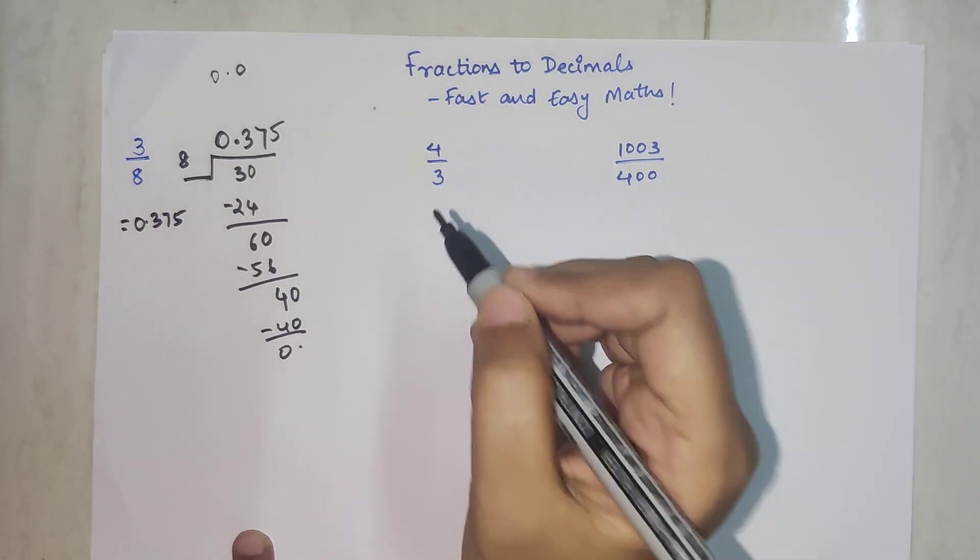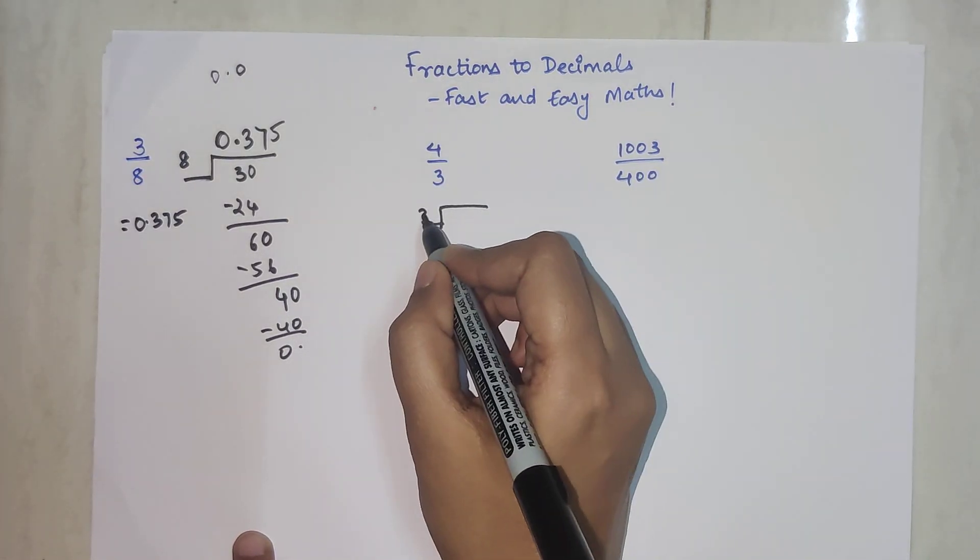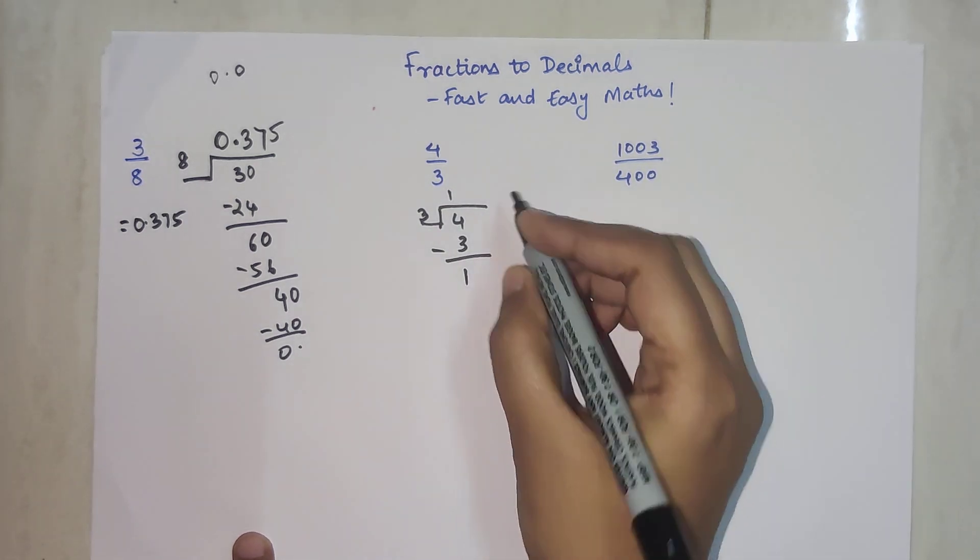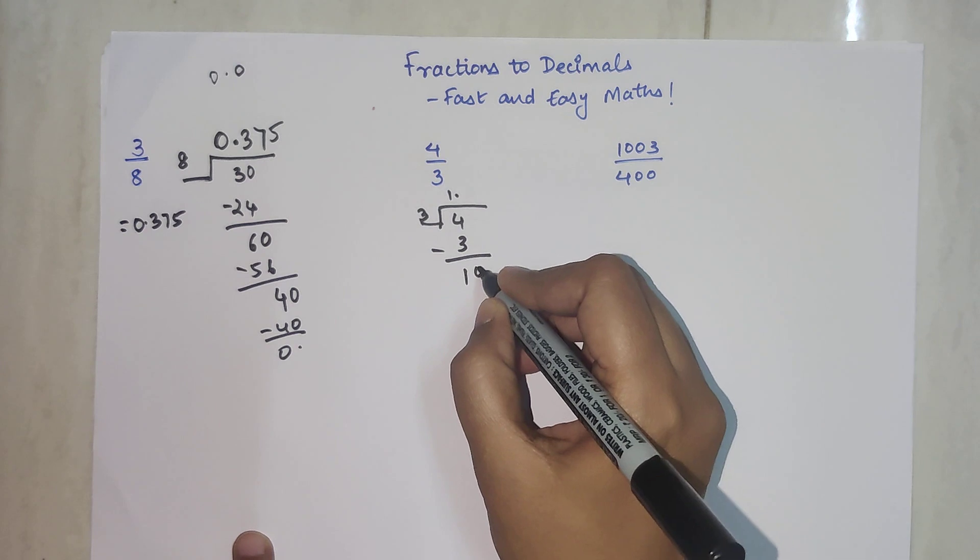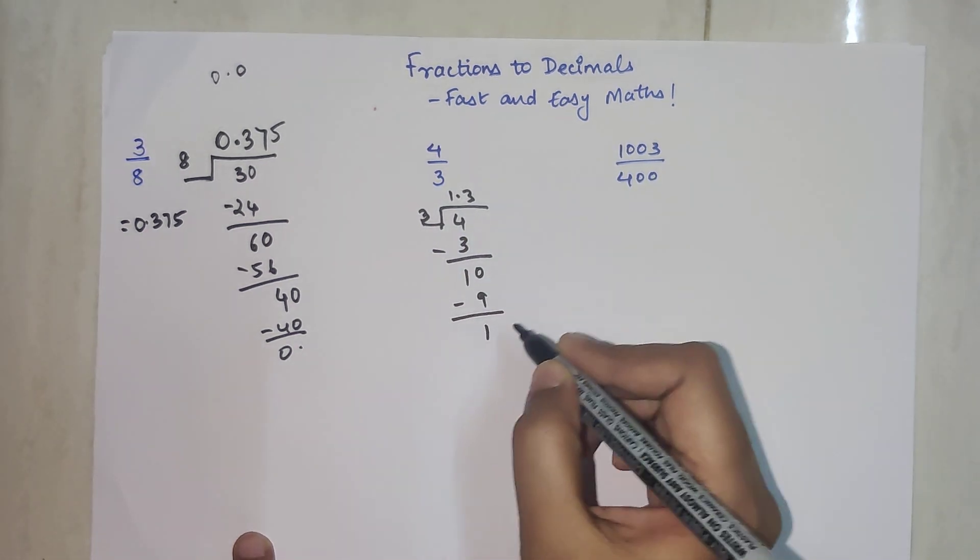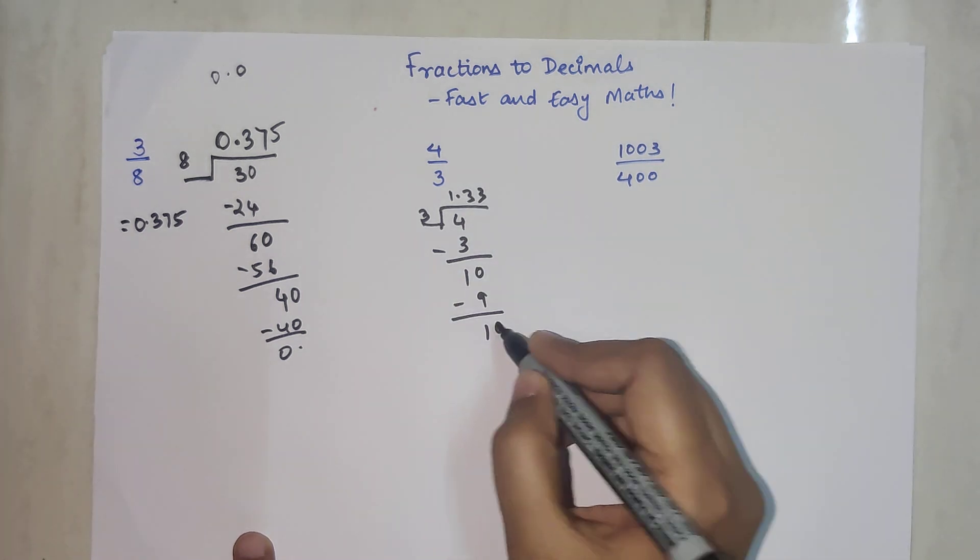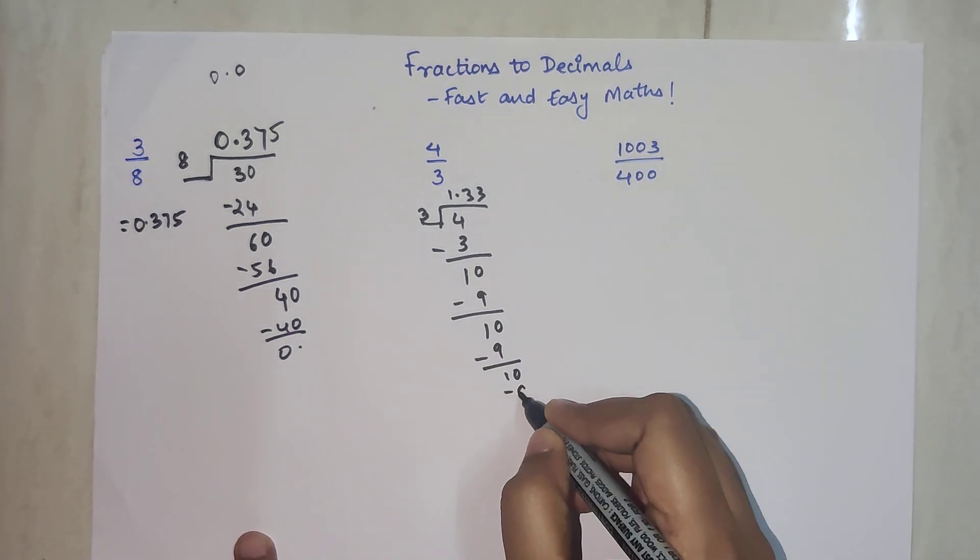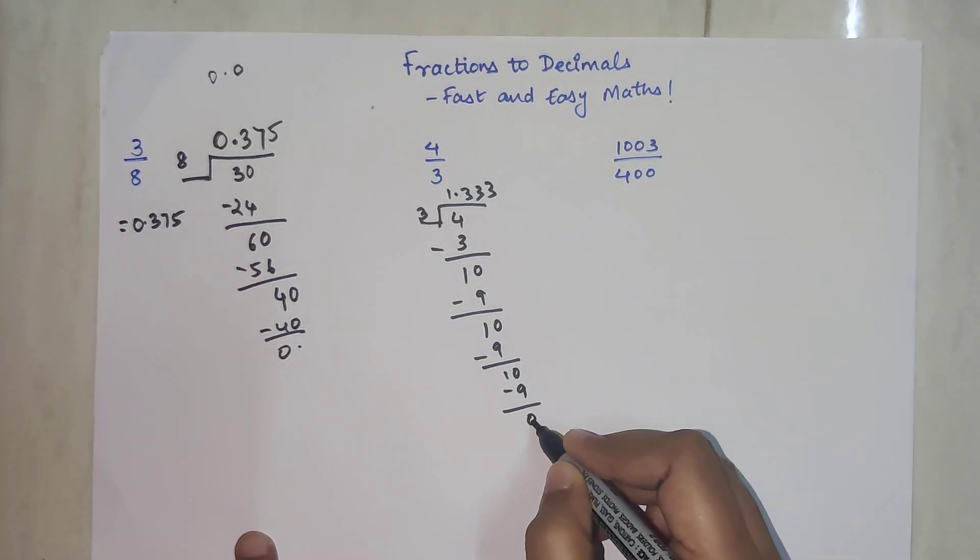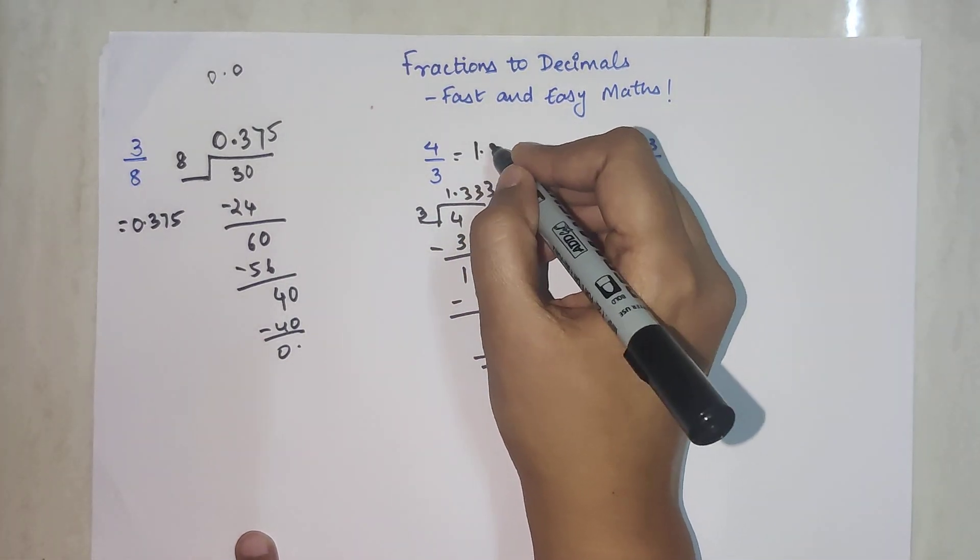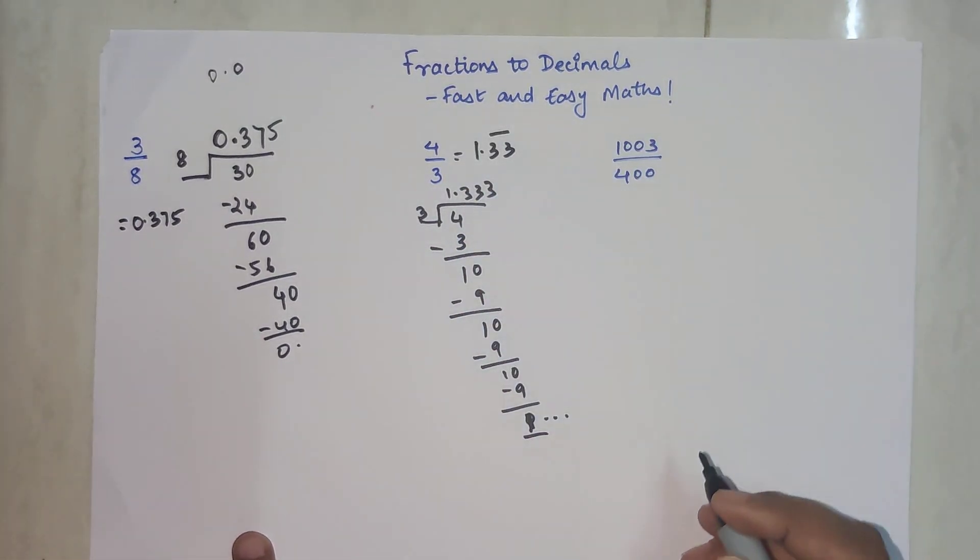Now next, we have 4/3. 3 times 1 gets me 3, I'm left with 1. So I can put a decimal, this is 0, and this is 3. So it gets me 9, 1. So again 3, 0, 9, and 10 minus 9. So again 3, sorry 1. So if you see, it's going on.